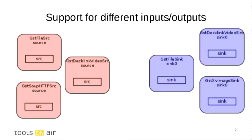GStreamer gives us support for different kinds of inputs and outputs. The colors are just slightly different even though they're very different on the screen. On the left we have one file source, one HTTP source, and one DeckLink video source. On the right we have one file sink, one DeckLink video sink - SDI is DeckLink - and one XV image sink, which is the Linux desktop video sink.